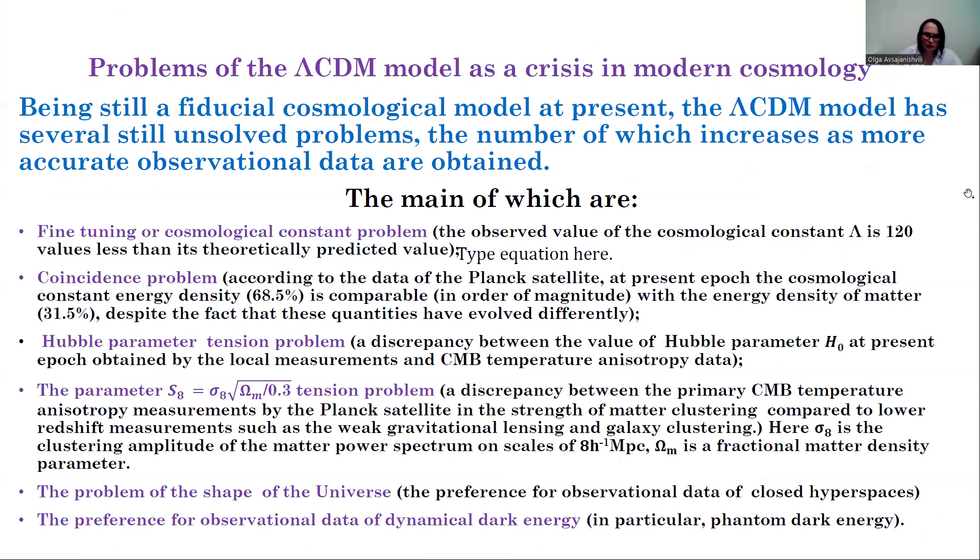Being still a fiducial cosmological model at present, the ΛCDM model has several still unresolved problems, the number of which increases as more accurate observational data are obtained. The main of which are: the fine-tuning or cosmological constant problem, the coincidence problem, the Hubble parameter tension problem, the parameter S8 tension problem, the problem of the shape of the universe, the preference in observational data for closed hyperspaces, and preference for dynamical dark energy.